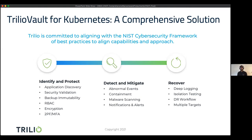Let's double-click on each of these pillars. Under the Identify and Protect section, Trilio has provided several things. We have application discovery — when we do the demo you'll see we show all the applications running in your cluster, segregated by namespaces or any other view, and we show you exactly which customer applications are protected and which are not, so you can get a clear picture of what needs attention.